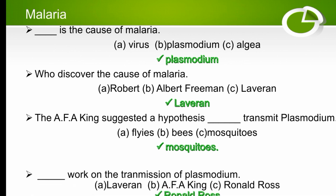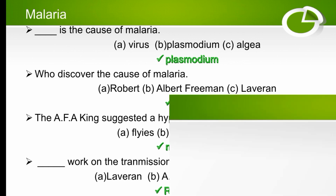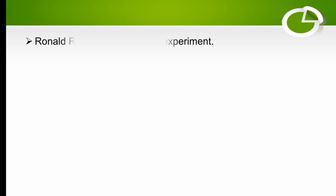Who worked on the transmission of plasmodium? The options are Laveran, AFA King, or Ronald Ross. Ronald Ross worked on the transmission of plasmodium, and he used sparrows in his experiment instead of human beings. The right option is C.